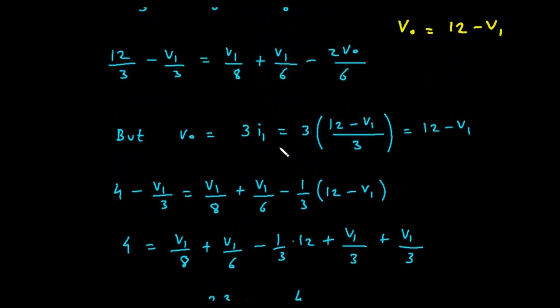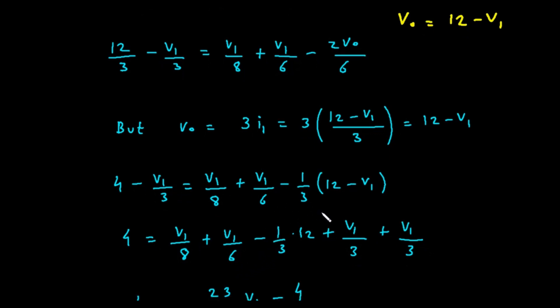Let's expand the last term on the right. 4 minus V sub 1 over 3 equals V sub 1 over 8 plus V sub 1 over 6 minus 4 plus V sub 1 over 3. Now we gather all the terms with V sub 1 on one side and all the constant numbers on the other. Let's move the minus 4 from the right side to the left, and the minus V sub 1 over 3 from the left to the right.